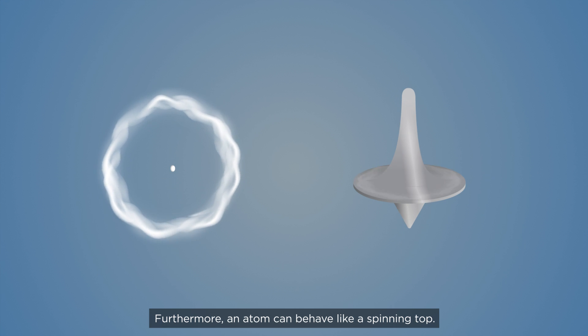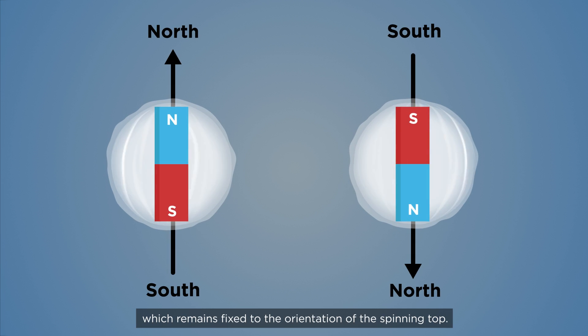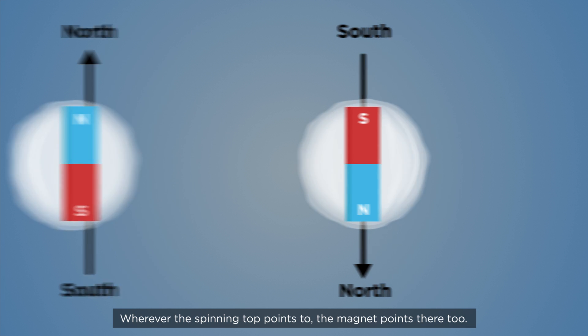Furthermore, an atom can behave like a spinning top. Due to its intrinsic spin, an atom behaves like a magnet, which remains fixed to the orientation of the spinning top. Wherever the spinning top points to, the magnet points there too.